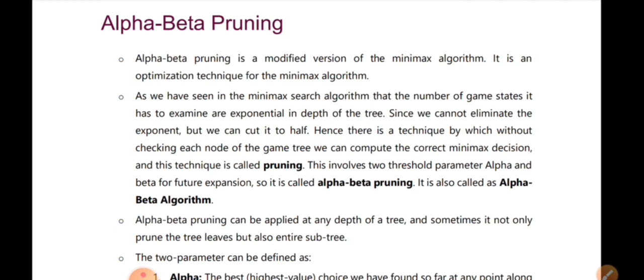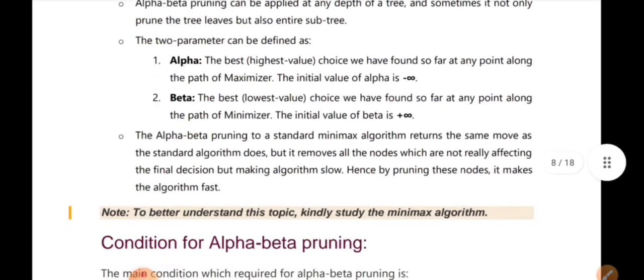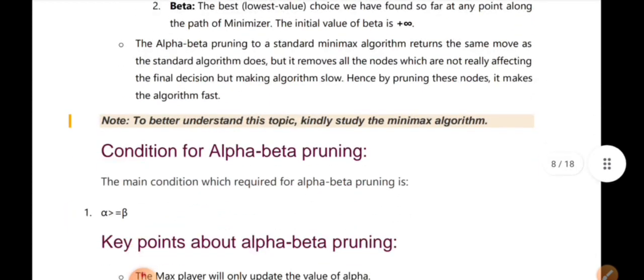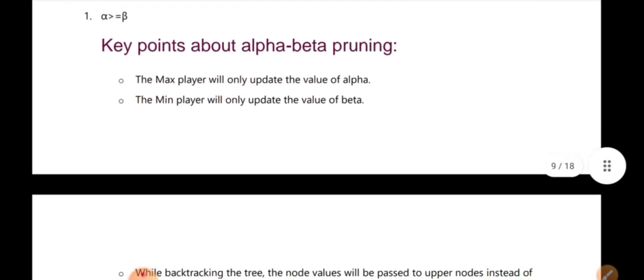We will say Min-Max. The maximum value is Alpha. We will check minus infinity. These are the two parameters in the tree. The key point is: there is a maximizer player and there is a minimizer player.